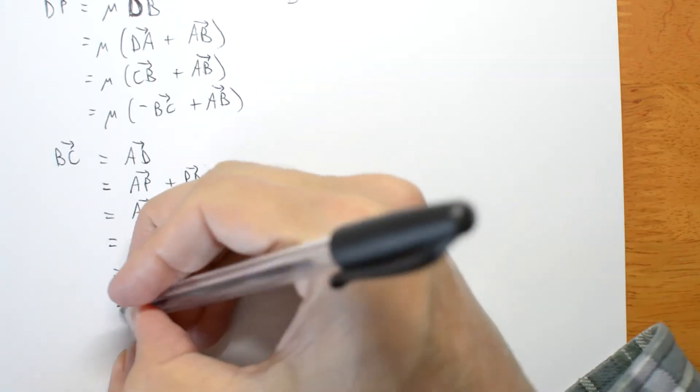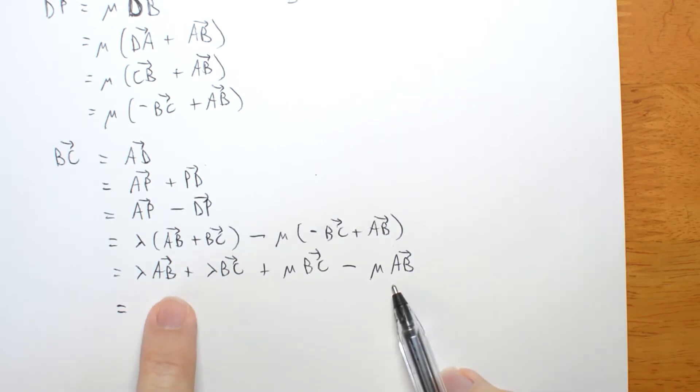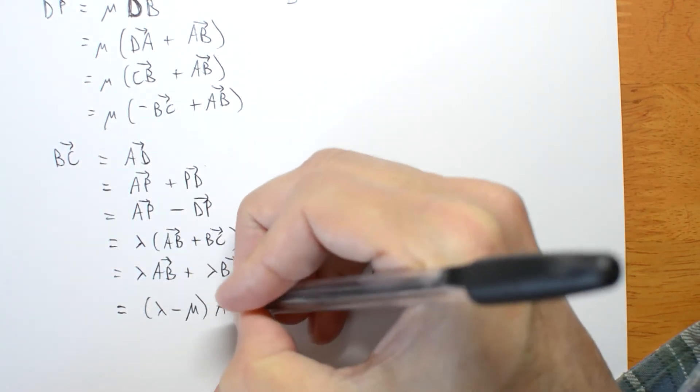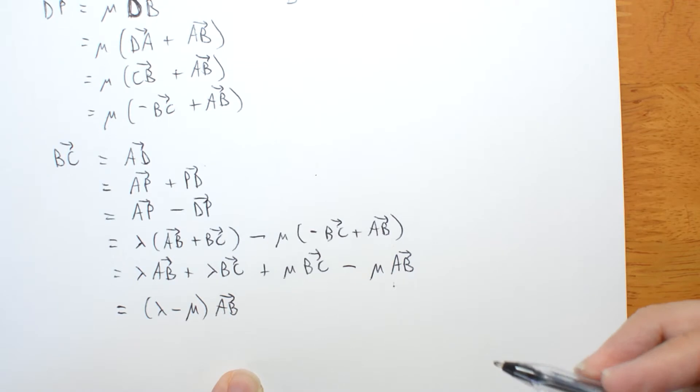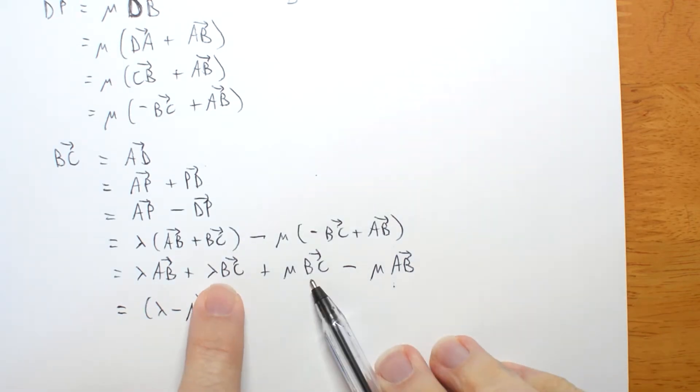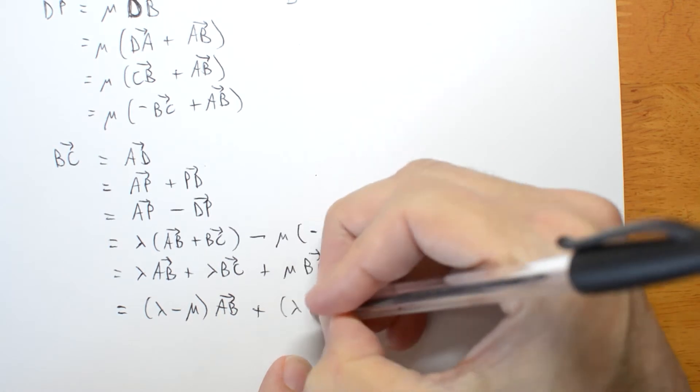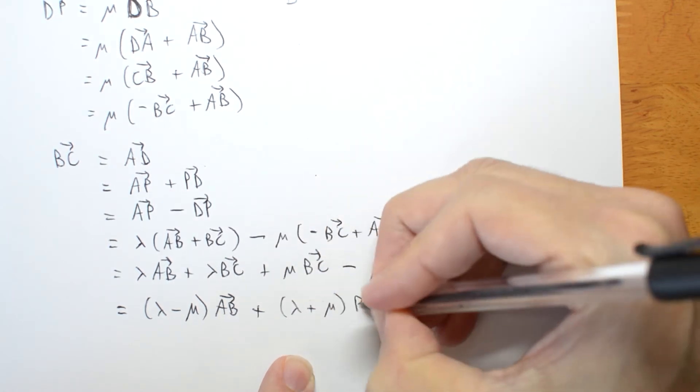Let's collect like terms. How many AB's have I got? I've got lambda minus mu, lambda minus mu times AB. And how many BC's have I got? I've got lambda plus mu, lambda plus mu BC's.